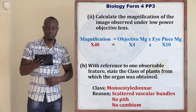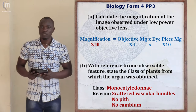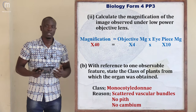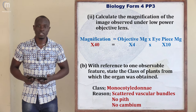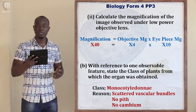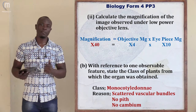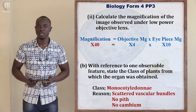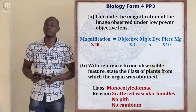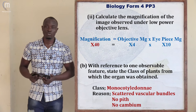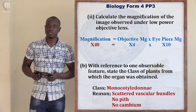Roman II asks: calculate the magnification of the image observed under the low power objective lens. From Form 1 microscopy knowledge, magnification equals eyepiece magnification times objective lens magnification. In this case, we are using the low power objective lens which was ×4, and the eyepiece magnification was ×10. So we take ×4 for the low power objective lens and multiply it by ×10 for the eyepiece, giving a total magnification of ×40.